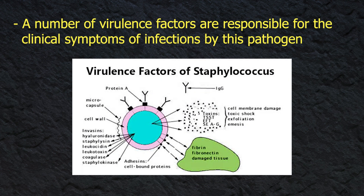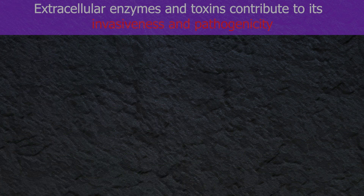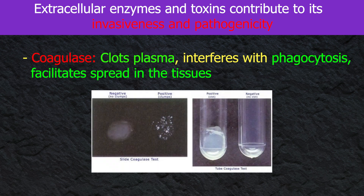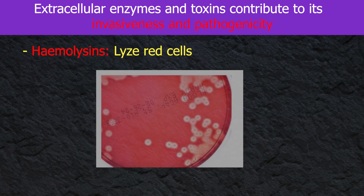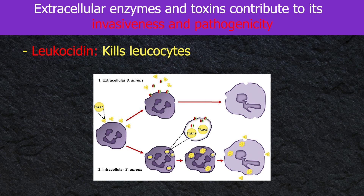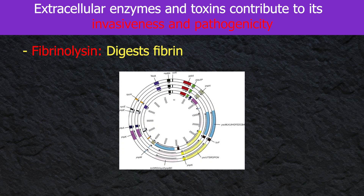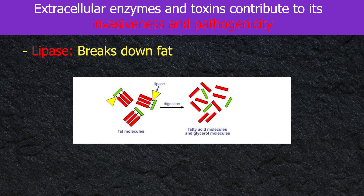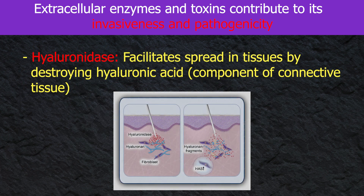A number of virulence factors are responsible for the clinical symptoms of infections by this pathogen. Extracellular enzymes and toxins contribute to its invasiveness and pathogenicity. Coagulase clots plasma and interferes with phagocytosis, facilitating spread in tissues. Hemolysins lyse red cells, leucocidin kills leukocytes, fibrinolysin digests fibrin, lipase breaks down fat, and hyaluronidase facilitates spread in tissues by destroying hyaluronic acid — a component of connective tissue.